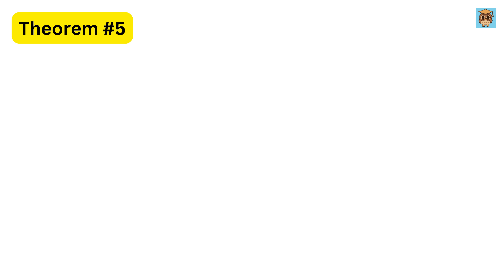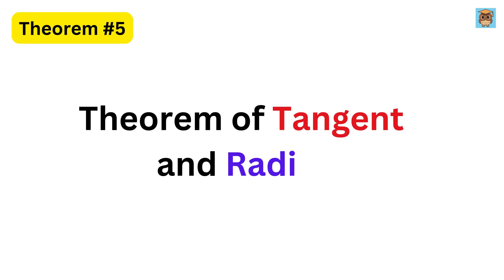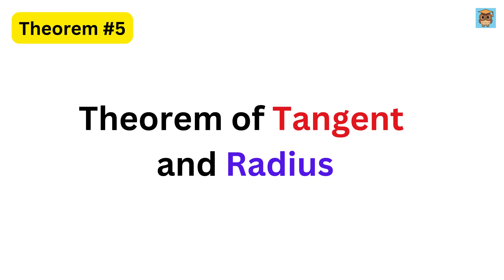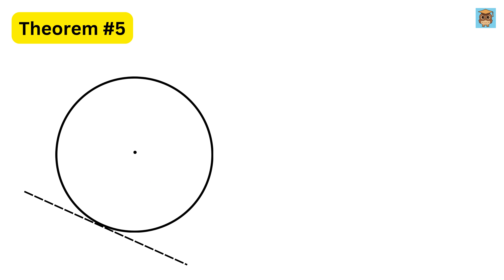Theorem five: theorem of tangent and radius. We have already mentioned that a tangent is a straight line that touches the circle at exactly one point without crossing it. The important property of a tangent is that it is always perpendicular to the radius at the point where it touches the circle.